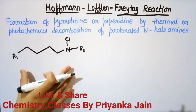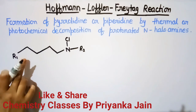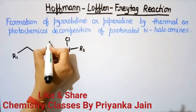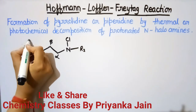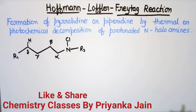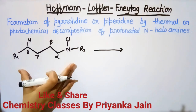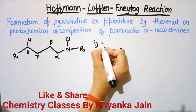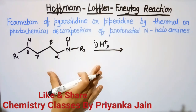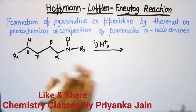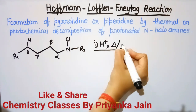The first condition for this reaction is that there should be a delta hydrogen atom present. This means: alpha position, beta position, gamma position, and delta position — and a hydrogen should be present at the delta position. The reaction proceeds when this compound is first protonated, and then the reaction mixture is subjected to heat or UV radiation.